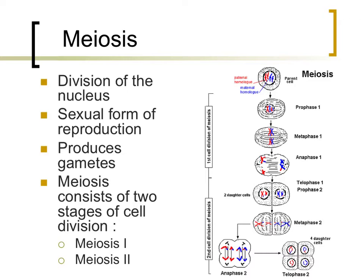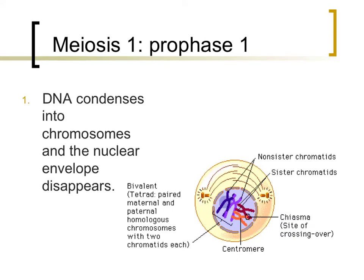These two divisions of the nucleus are entitled meiosis I and meiosis II. Each of these stages, as well as their steps, will be described throughout the rest of this video. Before cells undergo meiosis, they go through the same interphase stages as mitosis, doubling their DNA, growing in size, and producing more organelles.